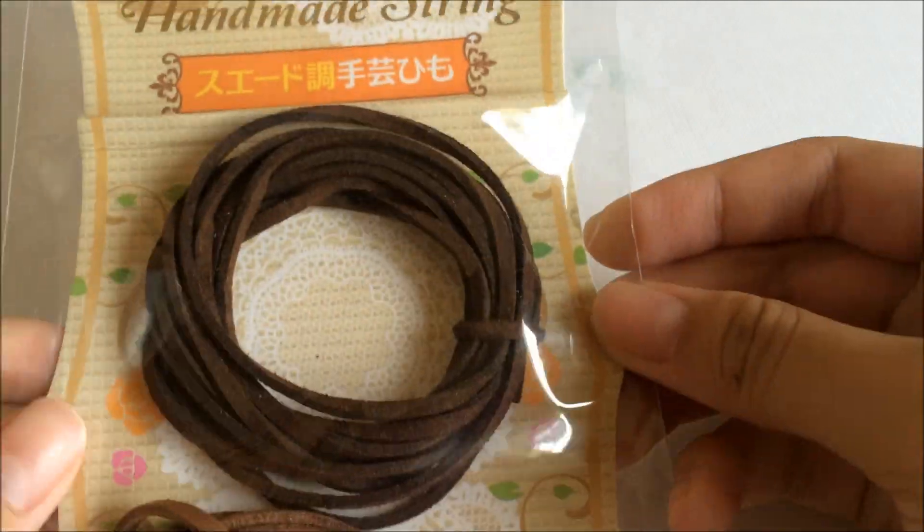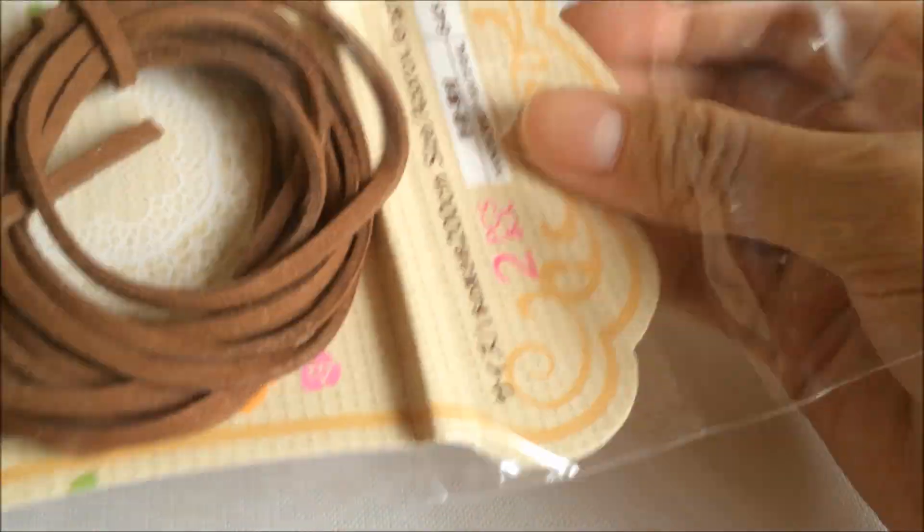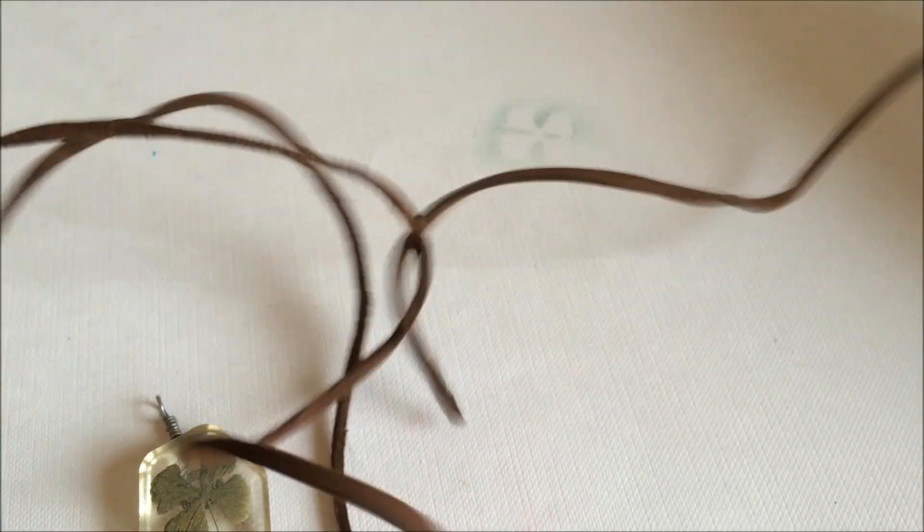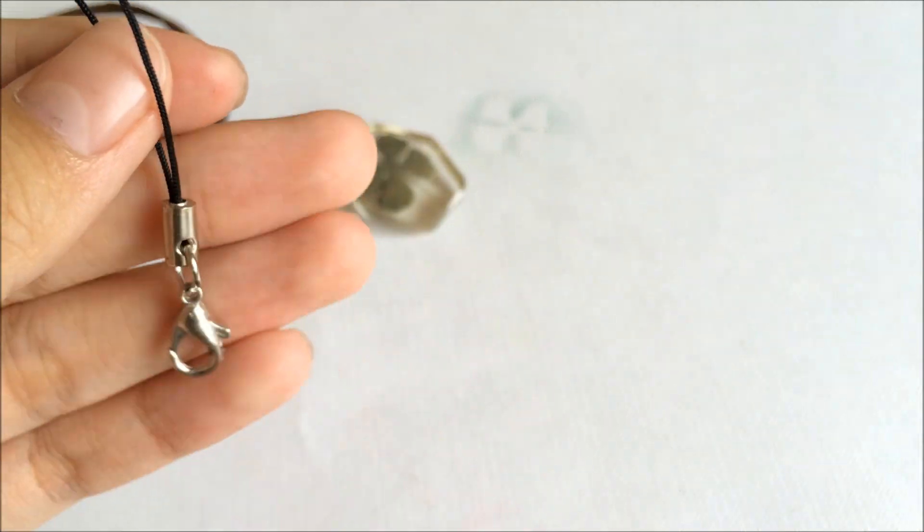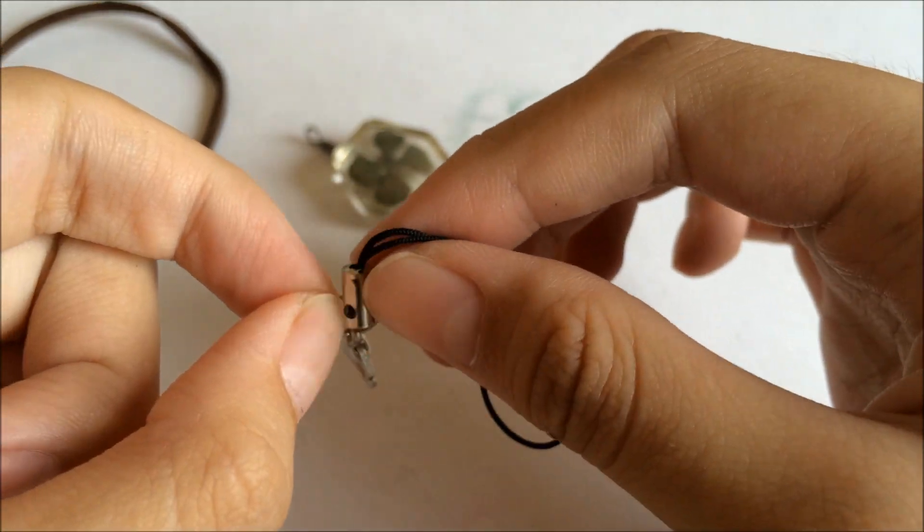After that, go and grab some chain or some necklace. I'm using this string from Daiso. It's kind of like a fabric string. I'm using the darker one instead. Just measure the desired length and cut it off.